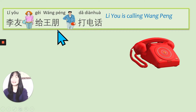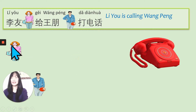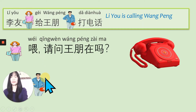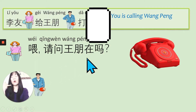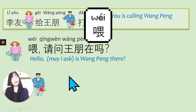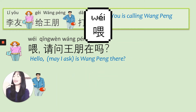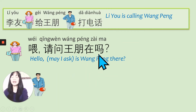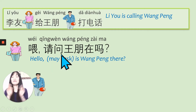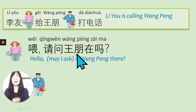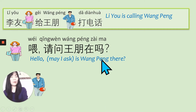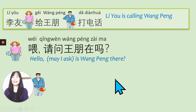李友给王朋友打电话 — Li You is calling Wang Peng. 喂, 请问王朋友在吗? When you pick up the phone in Chinese, hello, you say 喂. 请问王朋友在吗? 请问 means 'may I ask?' — you add 请问 in front of the question to become very, very polite. 请问 so-and-so 在吗 means 'Is so-and-so there?' 请问王朋友在吗 — Is Wang Peng there? Let's find out.